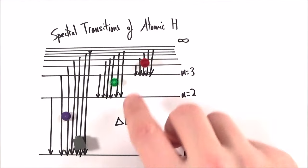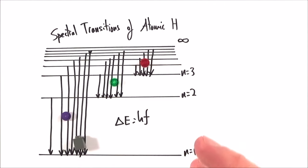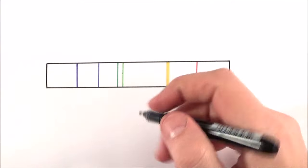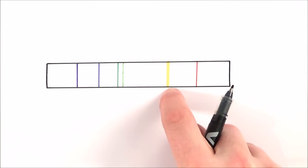You can only have certain values of photons given off and therefore certain values of wavelengths of light which are emitted by hydrogen. What we can actually do is look at the various colors of these emitted photons.